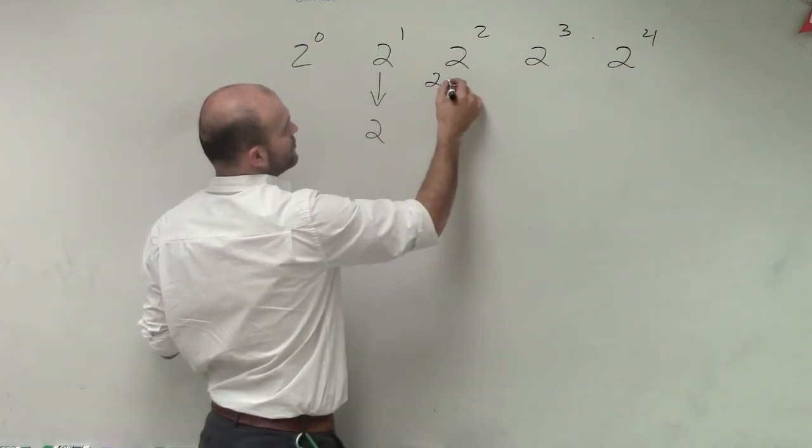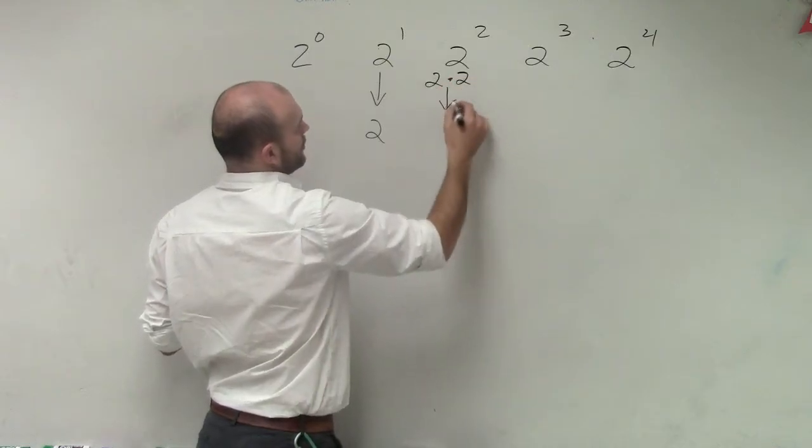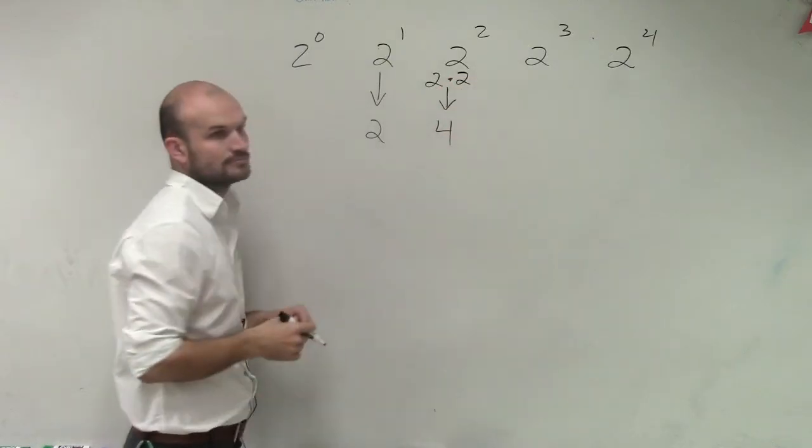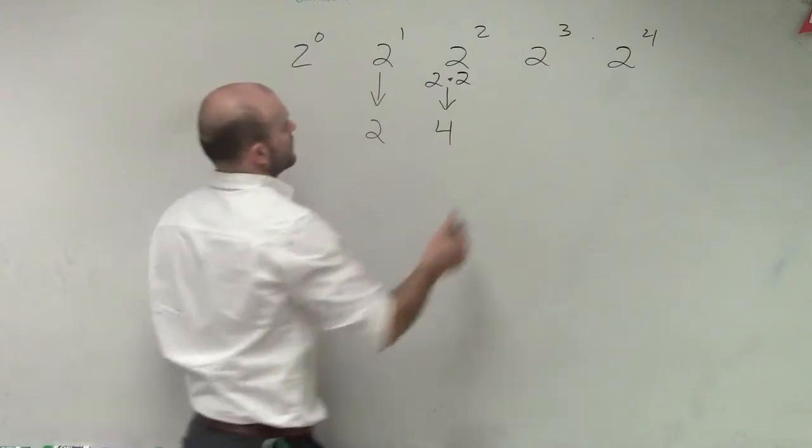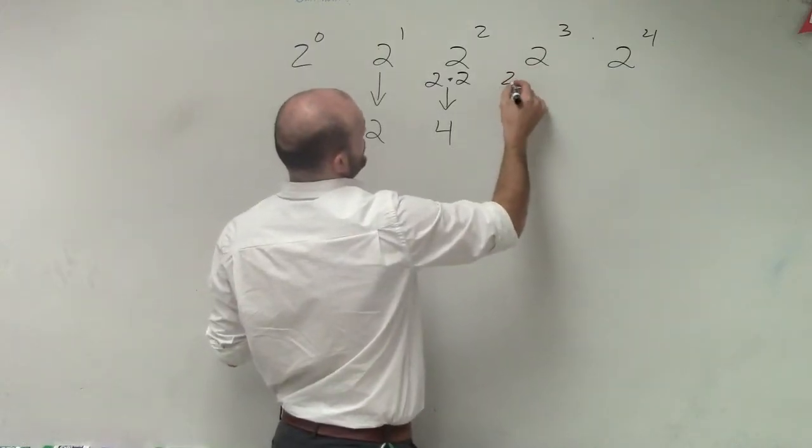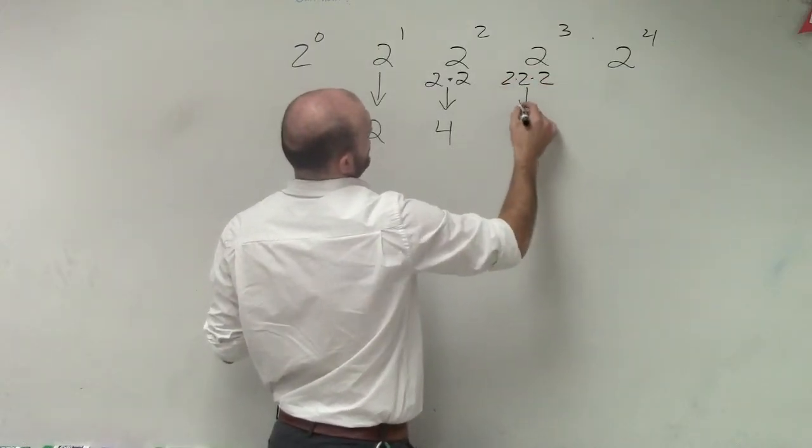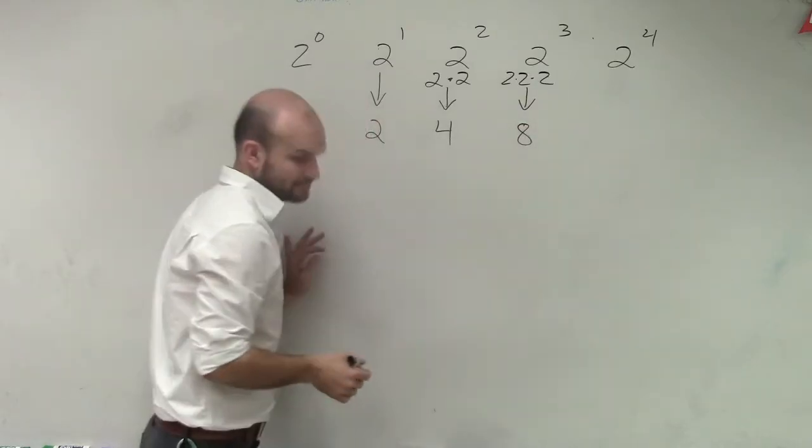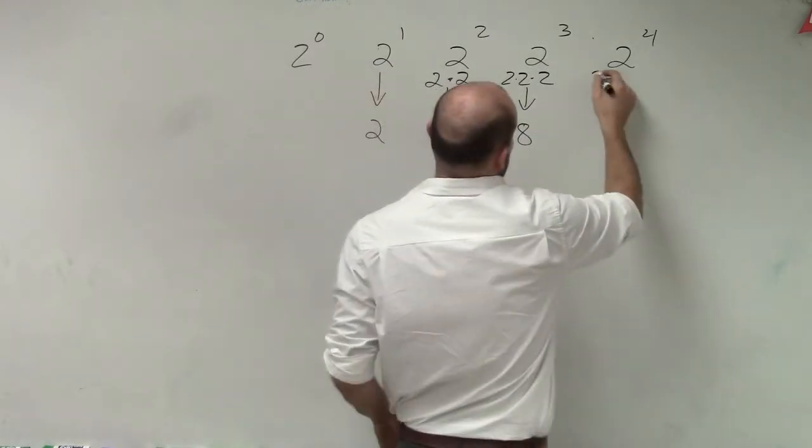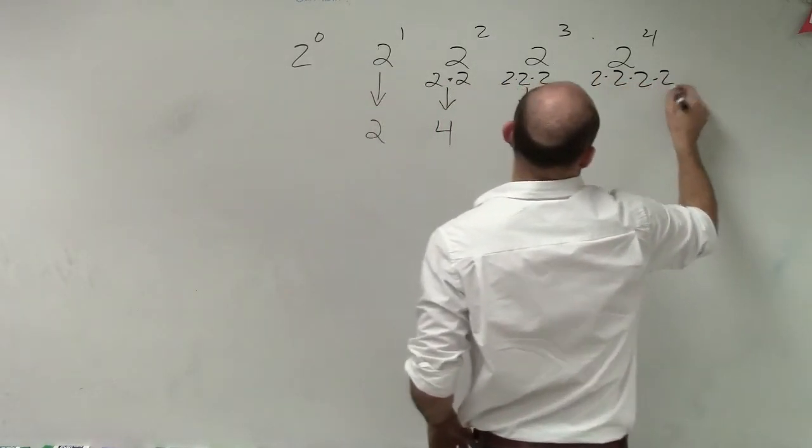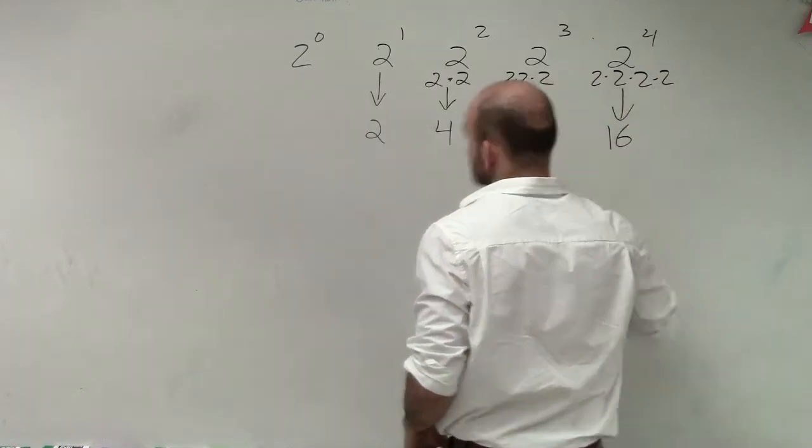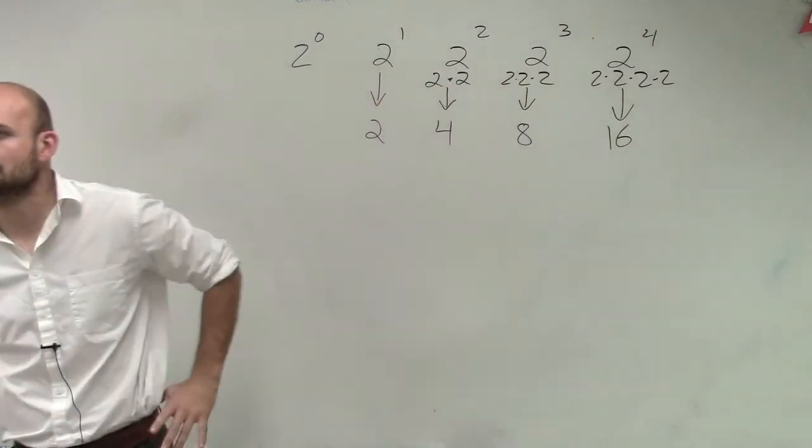2 squared means 2 times 2, which is 4. 2 cubed is 2 times 2 times 2, which is 8. Then we have 2 times 2 times 2 times 2, which is 16.